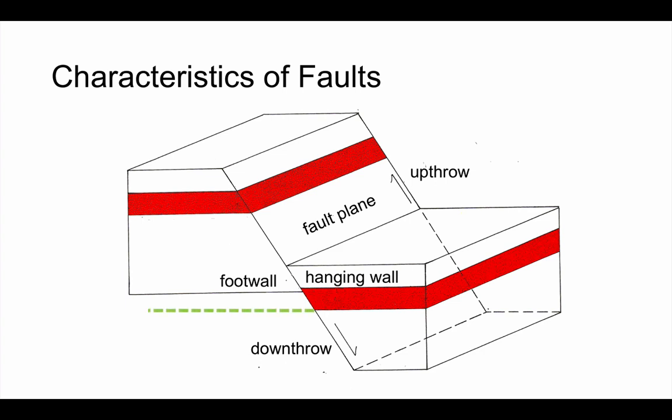To get some idea of how much the fault has moved, we talk about an idea we call throw. Now throw is the vertical displacement of the beds. So you can see in this case we've looked at the bottom of this red bed and the vertical distance from the bottom of the red bed on the downthrow side to the bottom of the red bed on the upthrow side is the throw. Don't measure it along the fault plane.